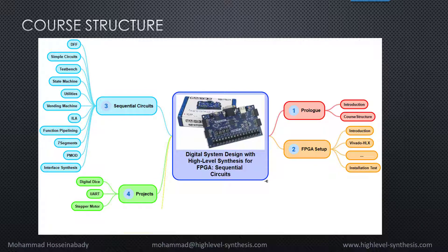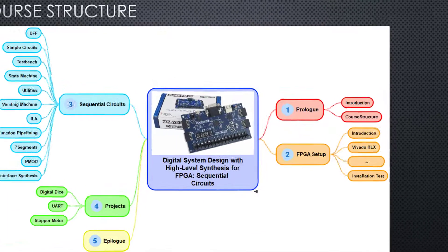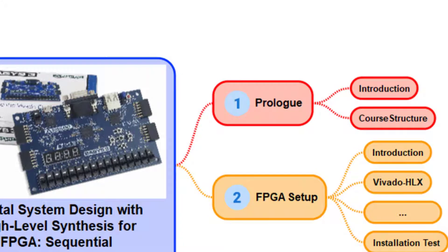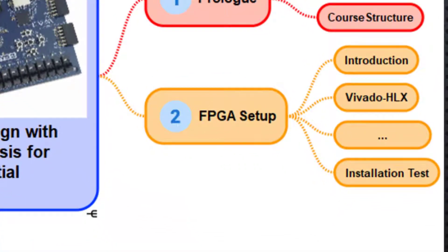This course comprises four parts. The first part is called Prolog, which introduces the course and its structure throughout two lectures. The current video is the second lecture. The second part is called Setup, which gives a big picture of the HLS for FPGA and its design flow, and how to install related software tools and set up the target FPGA board. It consists of one section including five lectures, from lecture three to seven.